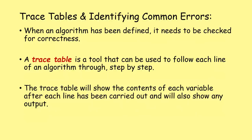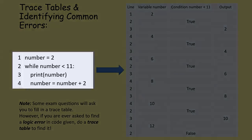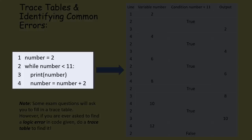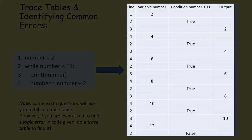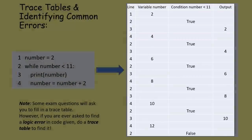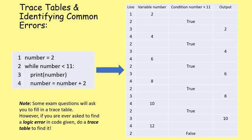Trace tables and identifying common errors. When an algorithm has been defined, it needs to be checked for correctness. We can use a trace table - a tool used to follow each line of an algorithm through step by step. The trace table shows the contents of each variable after each line has been carried out and will also show any output from the program.